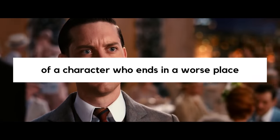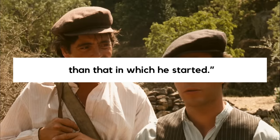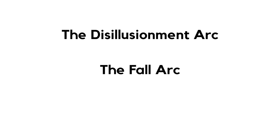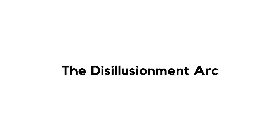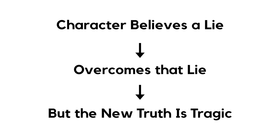The last type of arc that Weiland outlines is the negative change arc, and it's the most complicated of the three. Weiland writes: the negative change arc tells the story of a character who ends in a worse place than that in which he started. The negative change arc has three different types within it: the disillusionment arc, the fall arc, and the corruption arc. The disillusionment arc is exactly the same as a positive change arc — the character has a lie that must be overcome. The only difference is that when the character overcomes the lie and finds the truth, the truth is negative. Simply put: character believes a lie, overcomes that lie, but the new truth is tragic.